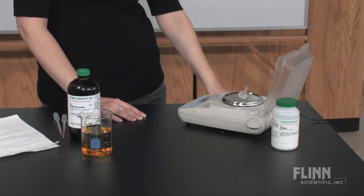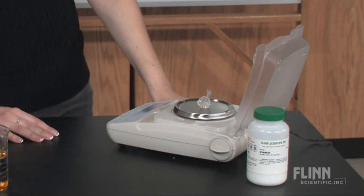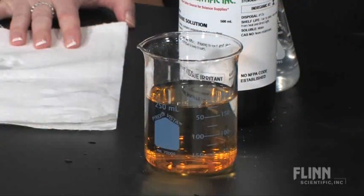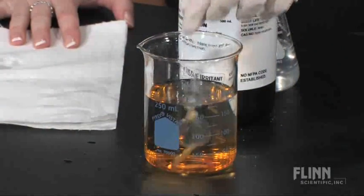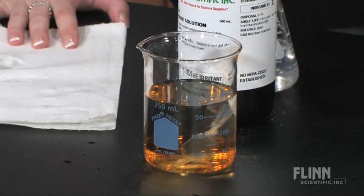Now we want to measure osmosis. Before we place the bag in the iodine solution, we have to gently dry and mass the bag. Record this initial mass because we are going to compare it later. Then place the bag in the beaker of iodine solution and wait 25 to 30 minutes to reach equilibrium.